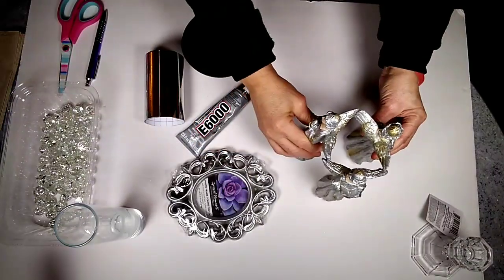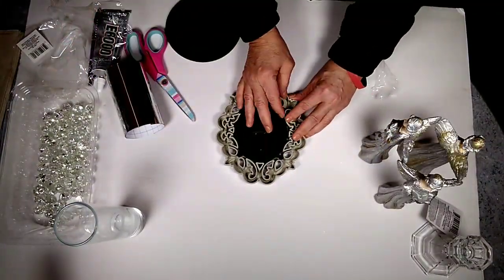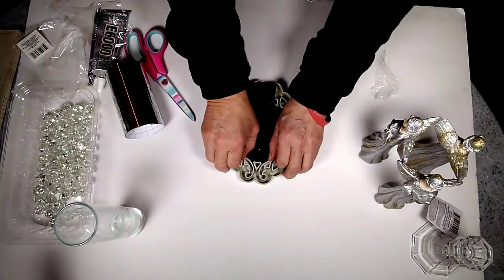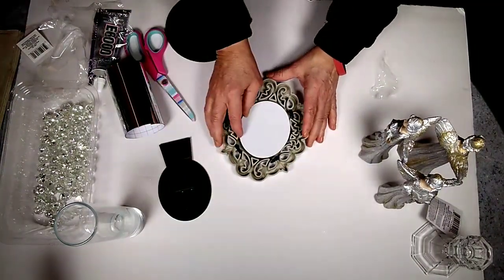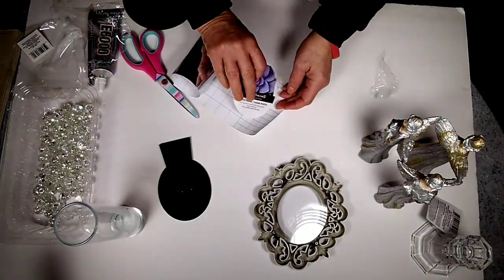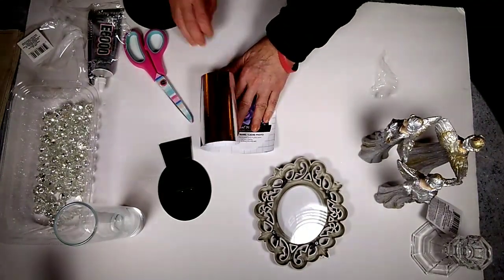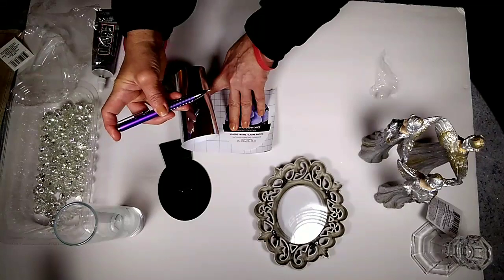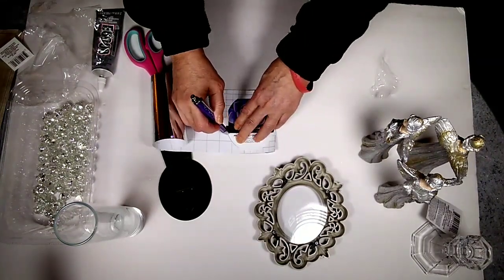Once that is done, we're going to put it to the side and we're going to take the picture frame. We're going to remove the backing, and taking the insert that comes inside of it, we're going to trace it on our gift wrapping paper or contact paper. This is our template so that we cut out the exact same shape and size that's going to go back into that picture frame.